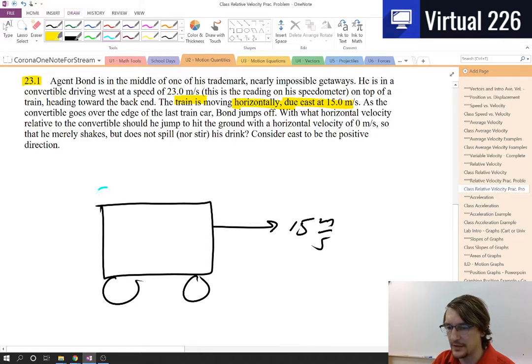Bond, on the other hand, here's his Aston Martin up here, poorly drawn by yours truly. It's moving at 23 meters per second to the west. Let's try a better three there.